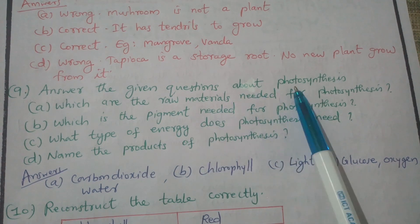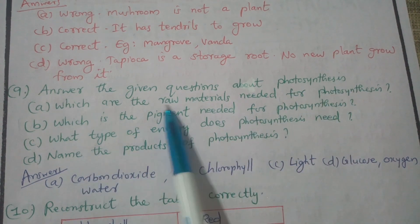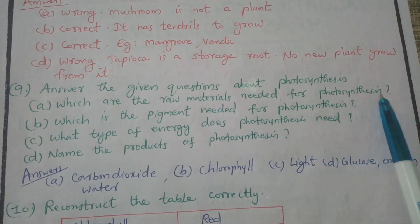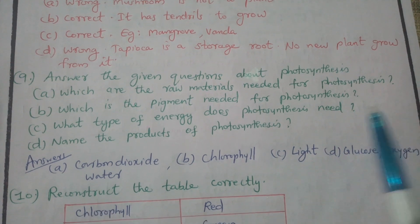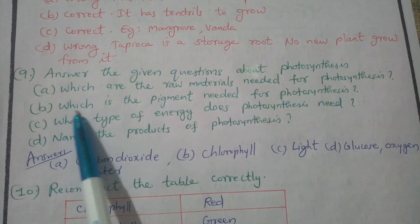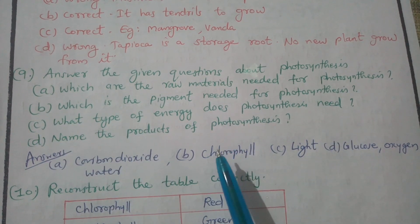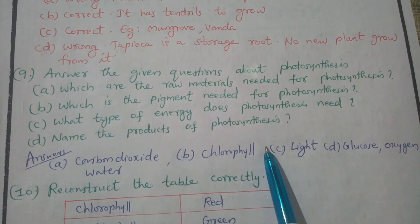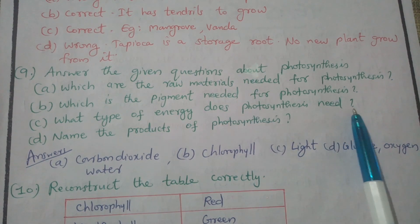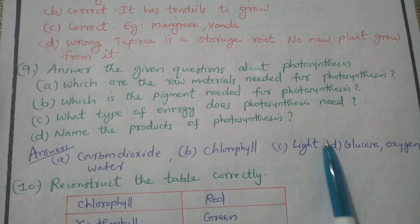Answer the given questions about photosynthesis. Which are the raw materials needed for photosynthesis? Carbon dioxide and water. Which is the pigment needed for photosynthesis? Chlorophyll. What type of energy does photosynthesis need? Light energy — sunlight energy.